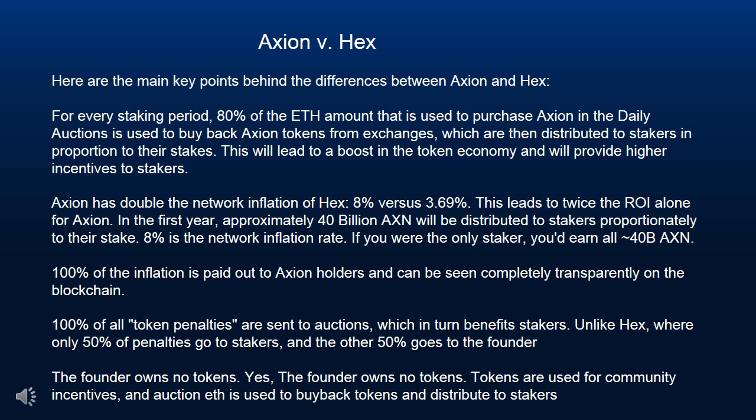Axion has doubled the network inflation of HEX: 8% vs. 3.69%. This leads to twice the ROI for Axion. In the first year, approximately 40 billion AXN will be distributed to stakers proportionately to their stake. 8% is the network inflation rate.